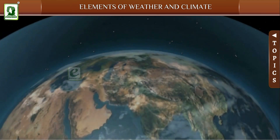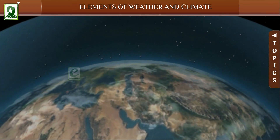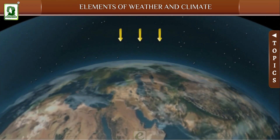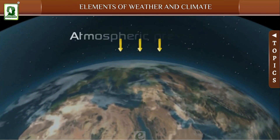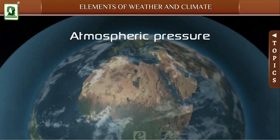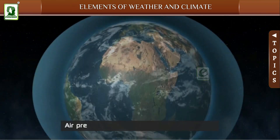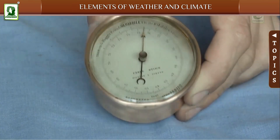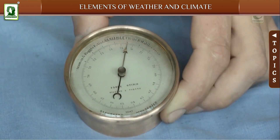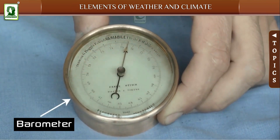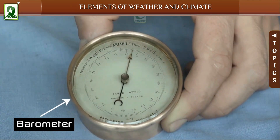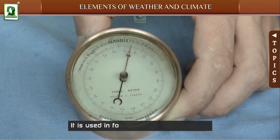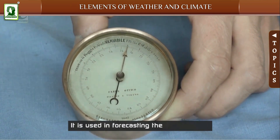The pressure exerted by the weight of the air on the Earth's surface is known as atmospheric pressure. Air pressure is measured in units of millibars. The instrument used to measure atmospheric pressure is known as a barometer, and it is also used in forecasting the weather.